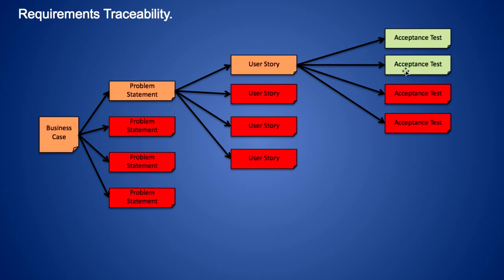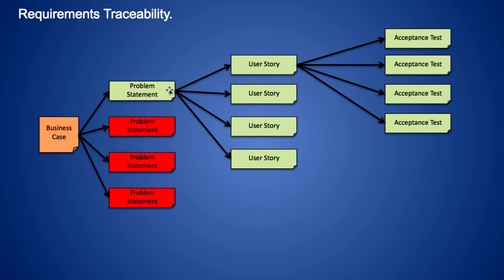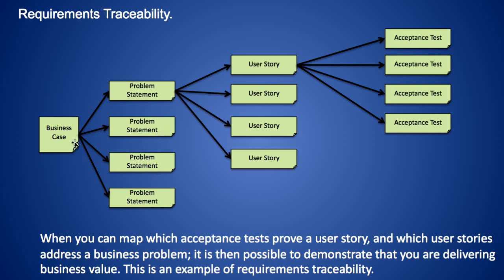As these acceptance tests begin to pass, the user story associated with those tests is considered complete. As all the user stories become complete, the problem has been resolved. As the problems are all resolved, the business case has been satisfied. This mapping of acceptance tests which prove user stories, and which user stories address which specific business problem, demonstrates that you're delivering the business value described in the business case. This is an example of requirements traceability.